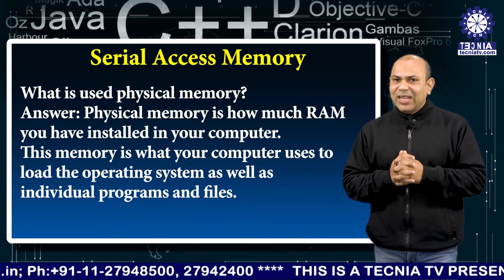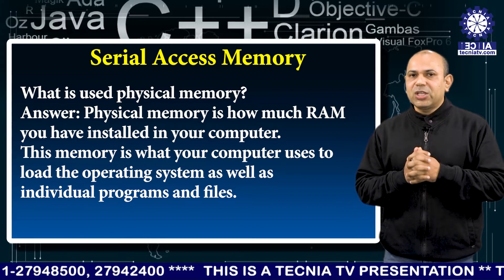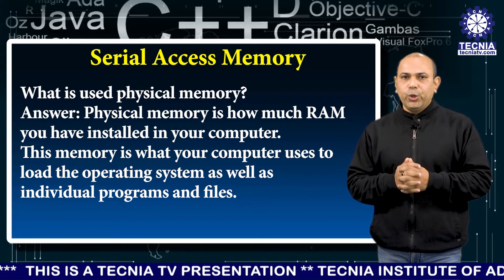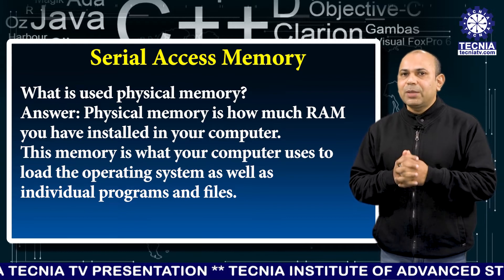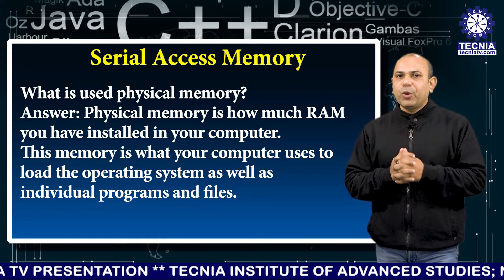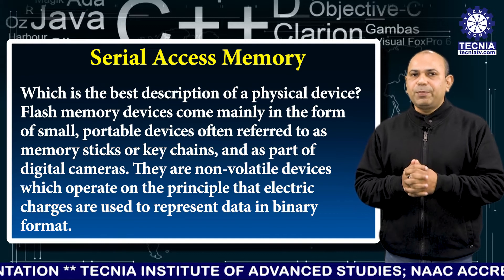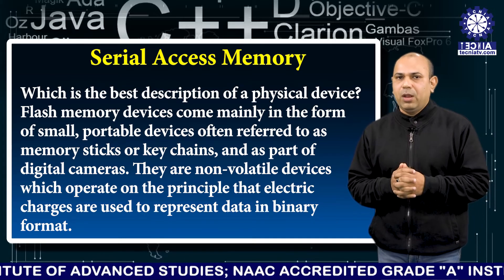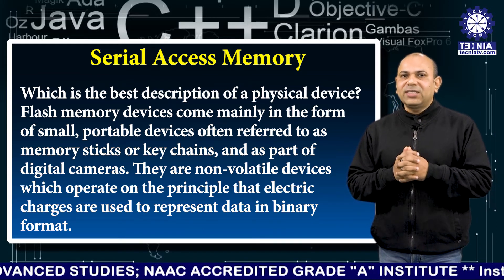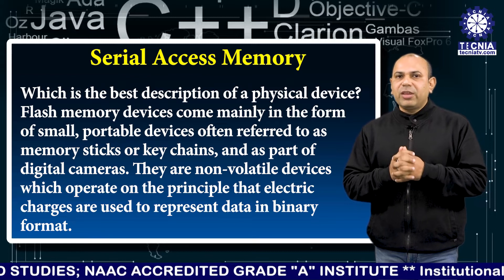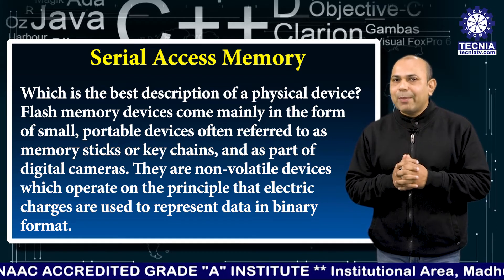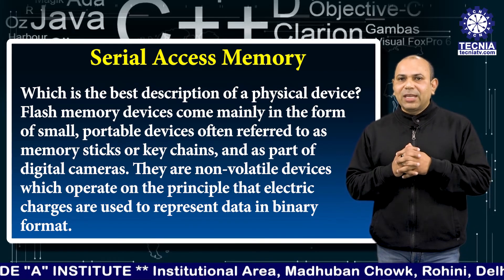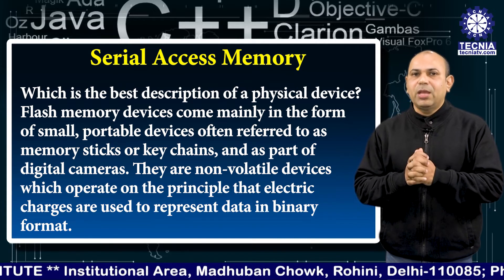What are the physical memories? Physical memory refers to however much RAM you have installed in your computer. This memory is what your computer uses to load the operating system as well as individual programs and files. Flash memory devices come mainly in the form of small portable devices often referred to as memory sticks or key chains, and as part of digital cameras. They are non-volatile devices which operate on the principle that electric charges are used to represent data in binary format.